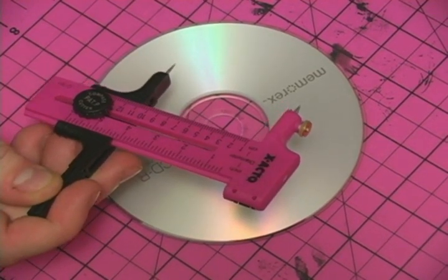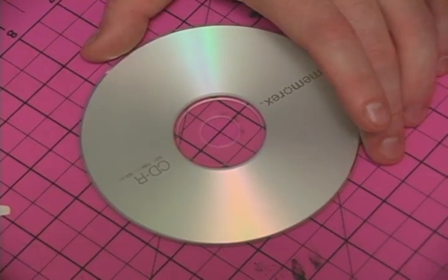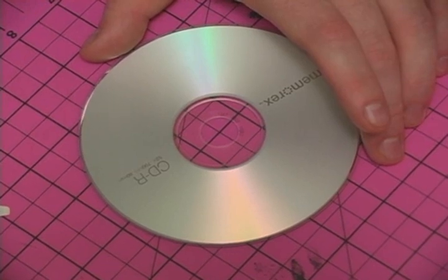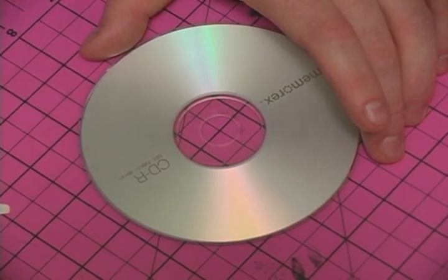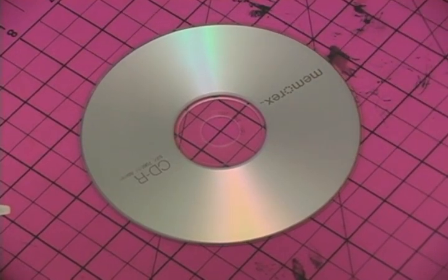This one's actually set at 11.8 centimeters. As you'll notice on the CD, the lines beneath it perfectly intersect at the middle of the circle, and what you can do to measure the outside...